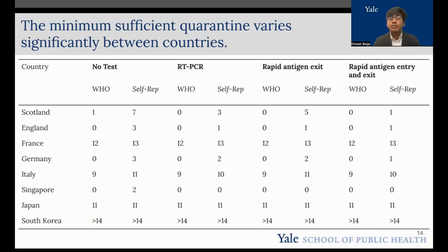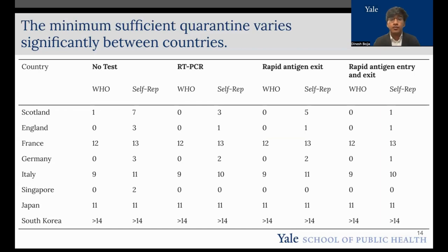This is the same data in table format. We can see not only the number of quarantine durations necessary for each country, stratified by each test, but also stratified by where the prevalence data for China was derived — from World Health Organization data or from self-reported prevalence statistics. We can see that depending on where the data for Chinese prevalence is derived from, there's a significant change in the minimum sufficient quarantine, meaning that it's important for countries to have accurate and timely data to get accurate information on their public health interventions.